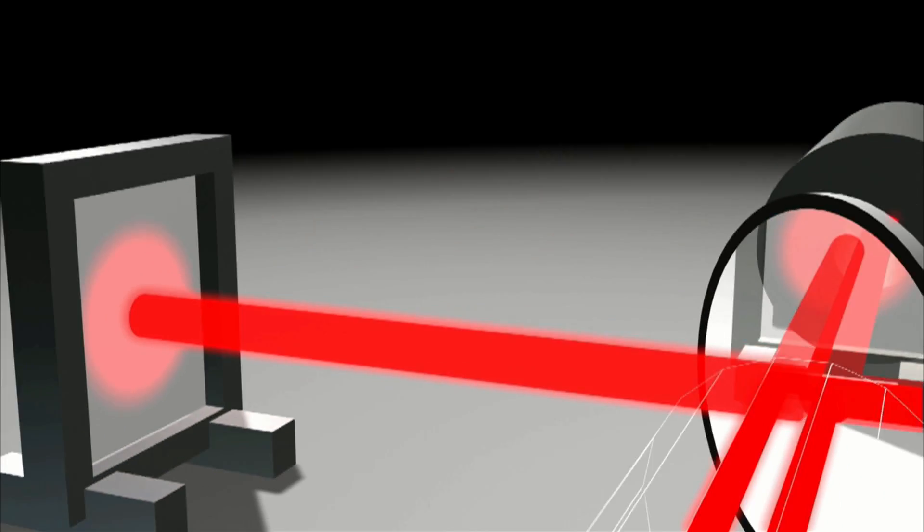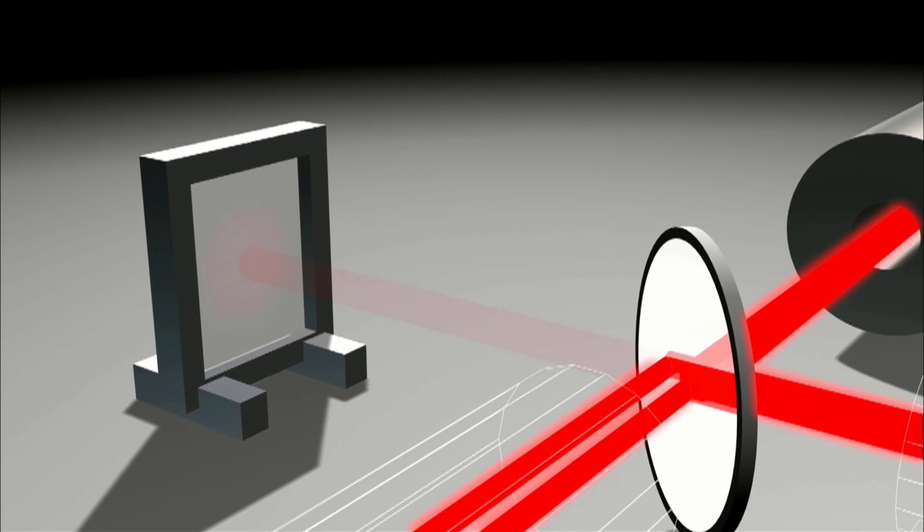Now some light does reach the detector with an intensity that varies as the distance between the mirrors varies. Measure that intensity and you're measuring gravity waves.